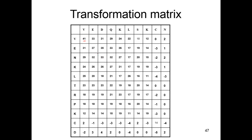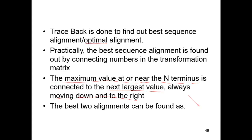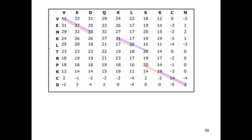By connecting these numbers, you will be able to perform your traceback procedure. We start with the largest value at the end terminus and then try to find which is the largest possible number present diagonally, down and to the right. So we begin with this 41. If we move diagonally down, the highest number is 37. Therefore, we connect 41 to 37.